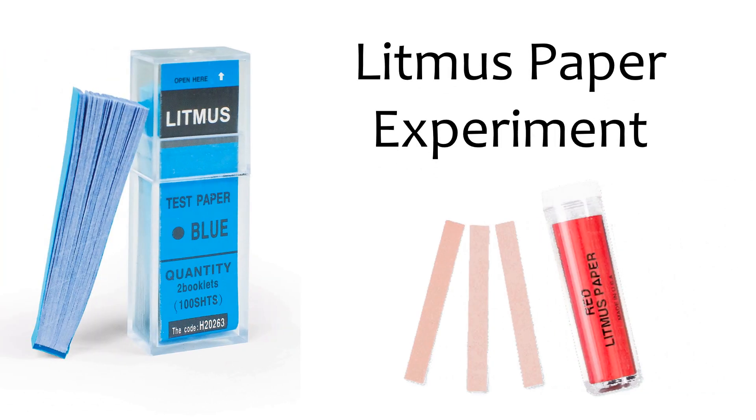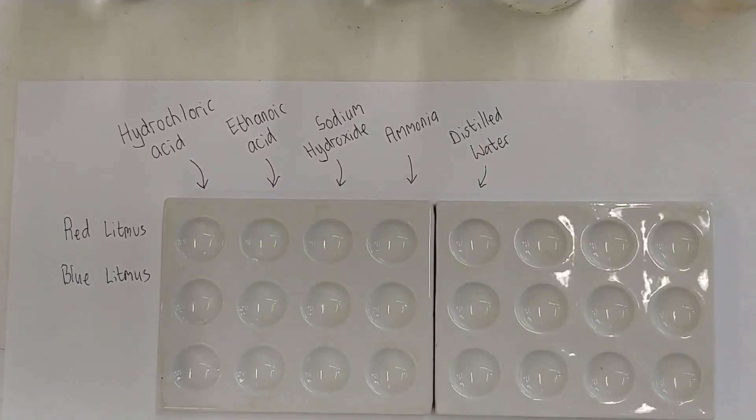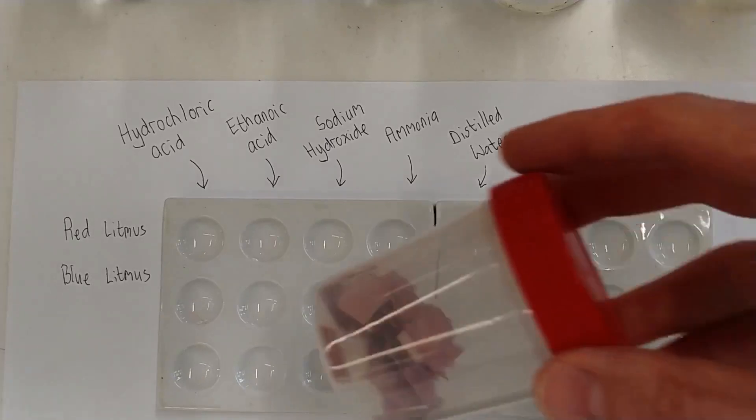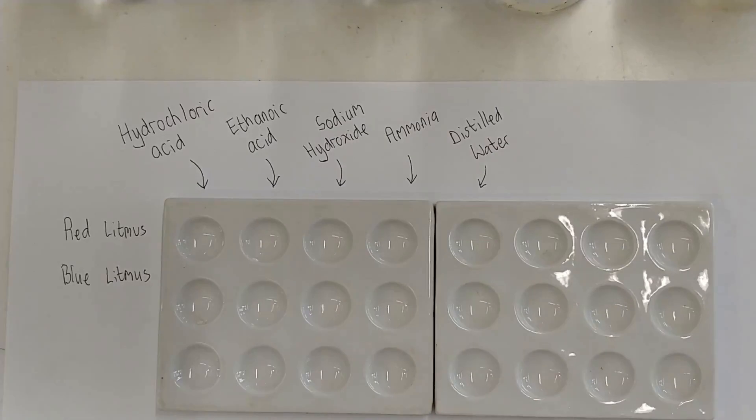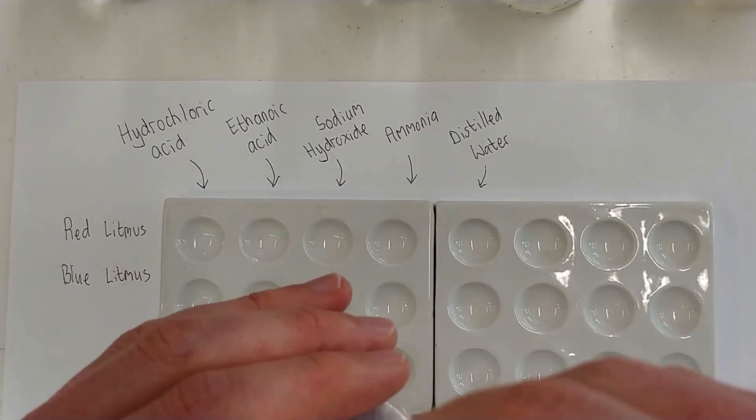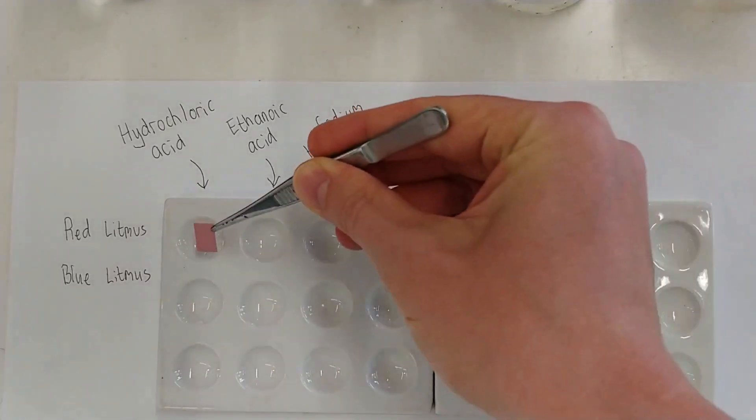Okay. In front of you, you can see the two spot plates, and we're just about to set up the experiment by first putting some of the red litmus paper on the top row.